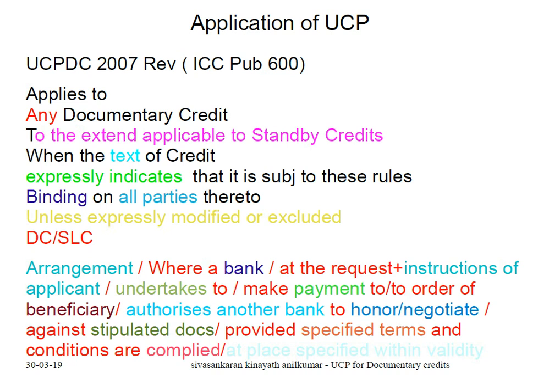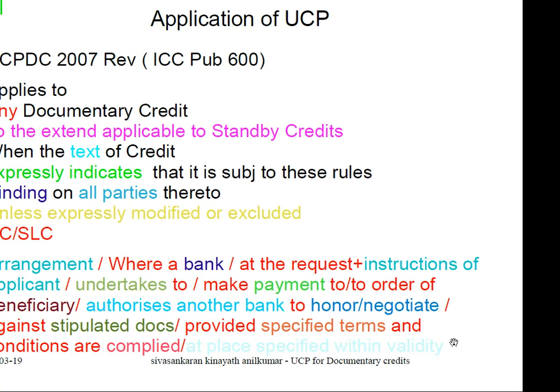What is a credit? A credit is an arrangement where a bank, at the request of the applicant, undertakes to make payment to a beneficiary against stipulated documents, provided specified terms and conditions are complied with. The issuing bank authorizes another bank to honor or negotiate, provided stipulated documents are submitted and they are complying with the terms and conditions.